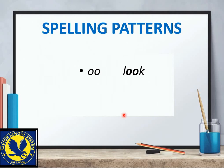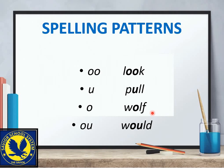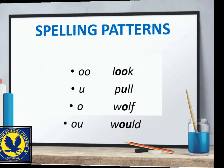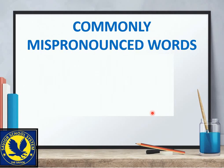یہ vowel sound جو 'full' میں آئی، اس کی spelling double-o سے بھی ہو سکتی ہے جیسے 'look'، single u سے بھی جیسے 'pull'، single o سے بھی جیسے 'wolf'، اور o-u سے بھی جیسے 'would'۔ ان تینوں الفاظ کی pronunciation same ہے: look, pull, wolf, and would۔